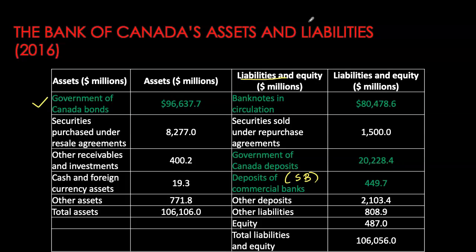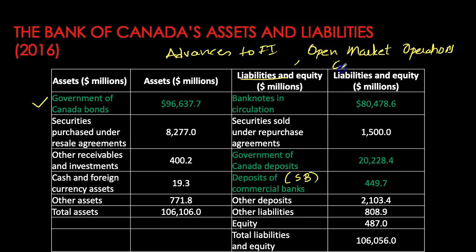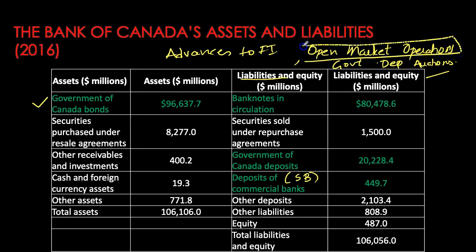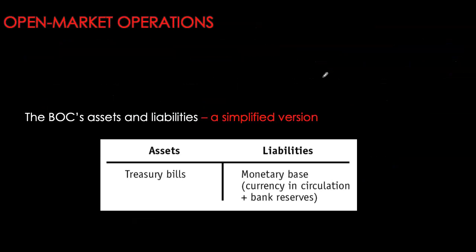How does the Bank of Canada control the target for the overnight interest rate? It has many tools at its disposal: open market operations, advances to financial institutions, and government deposit auctions. At the principles of macroeconomics level, we'll focus on open market operations only. Here we have a simplified version of the Bank of Canada's balance sheet — assets include government bonds or treasury bills, and liabilities include currency in circulation and bank reserves. Currency and reserves together make up the monetary base.